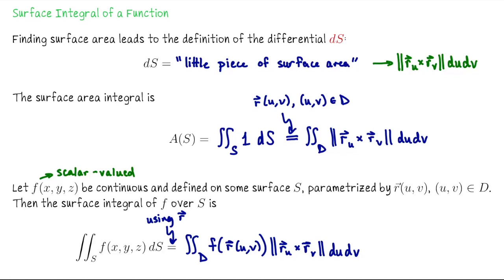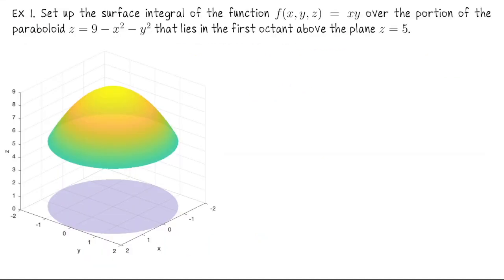We'll do a couple of examples. We probably won't integrate all the way to a final number, but let's at least set up the surface integral of the function F(X, Y, Z) = XY over the portion of the paraboloid Z = 9 − X² − Y² that lies in the first octant above the plane Z = 5.